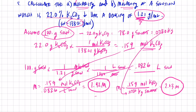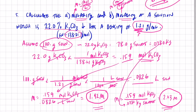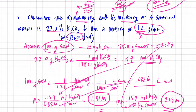So we have molarity of 1.92 M and molality of 2.03 m — and all I gave you was percent by weight and density. We'll be able to practice some more of these in class. See you soon, bye-bye.